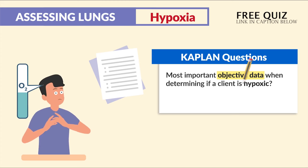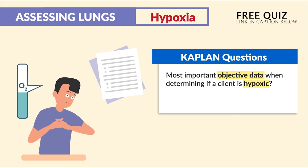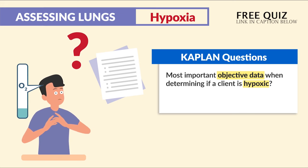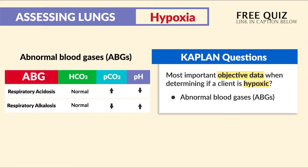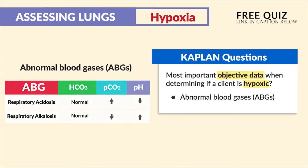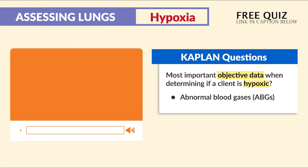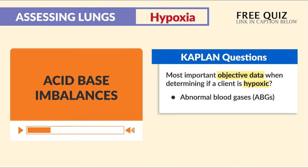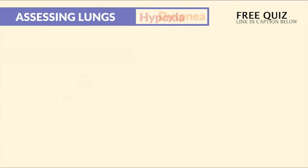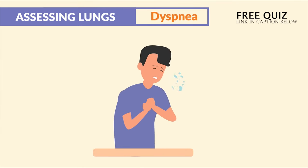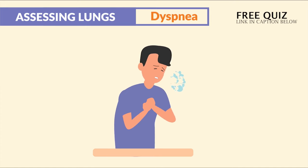Kaplan mentions the most important objective data when determining if a client is hypoxic is a lab value — specifically abnormal blood gases, those ABGs — which are covered in full in the acid-base imbalance lectures.